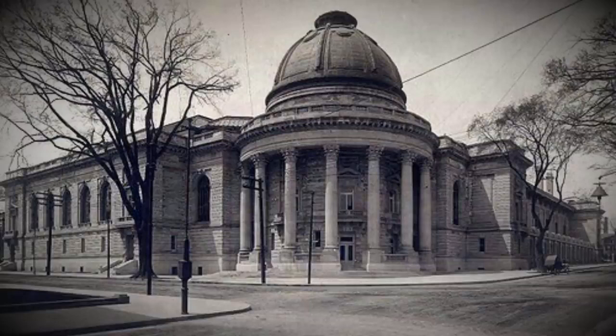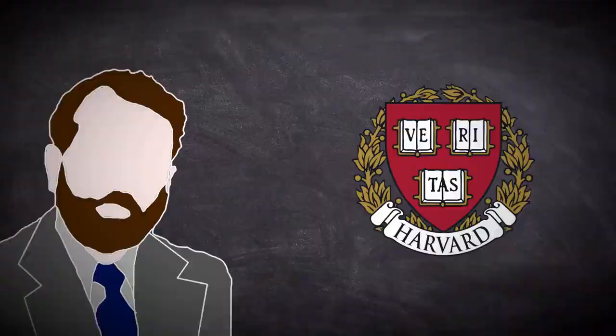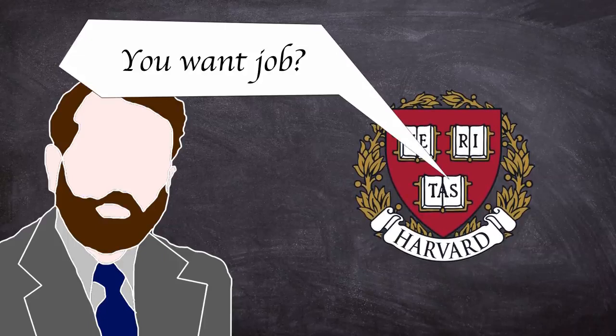He became an assistant professor at Yale around the same time. Later on, he served as an assistant professor in the department of social relations at Harvard from 1963 to 1966, and this brings us very quickly onto his obedience study, more commonly known as the Milgram experiment.